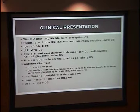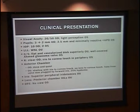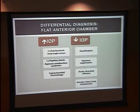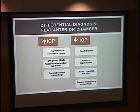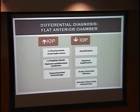Before continuing, what would be your differential diagnosis? For a flat anterior chamber: with high intraocular pressure, first consider pupillary block and acute angle closure. Without pupillary block, consider aqueous misdirection syndrome, or in a postoperative patient, suprachoroidal hemorrhage. With low intraocular pressure, consider overfiltration or a wound leak — most common in this postoperative context — aqueous suppression, acute choroidal effusion, or annular ciliary body detachment.